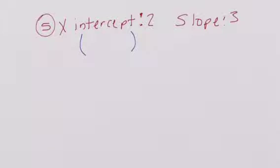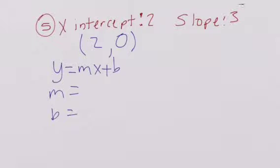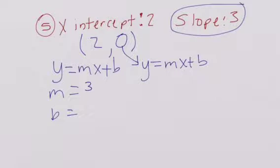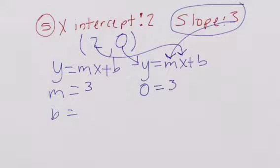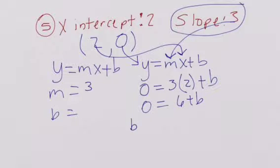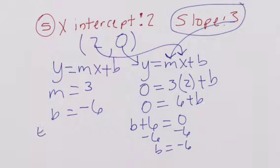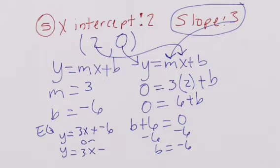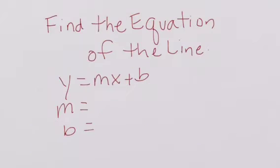Now we have an x-intercept. When we have an x-intercept, y is 0. Finding the equation of the line: y equals mx plus b, m equals, b equals. Our slope is given as 3. So y equals mx plus b — y is 0, slope is 3, x is 2. That gives 0 equals 3 times 2 plus b, so 0 equals 6 plus b. b is not on the left, symmetrical: b plus 6 equals 0. Pair out the 6, b equals negative 6. Our equation is y equals 3x plus negative 6, or y equals 3x minus 6.